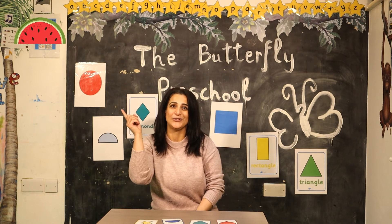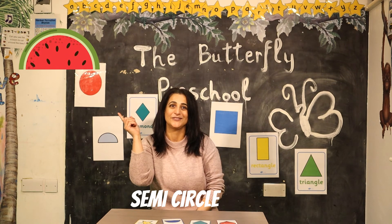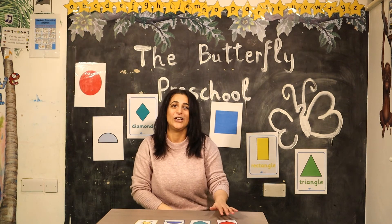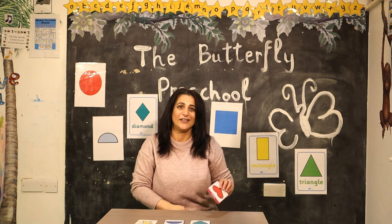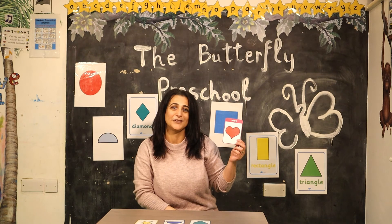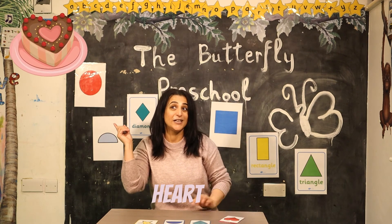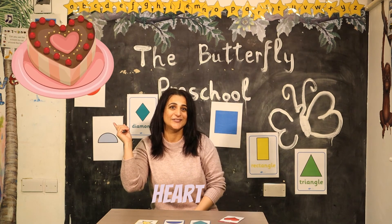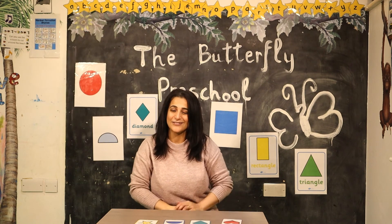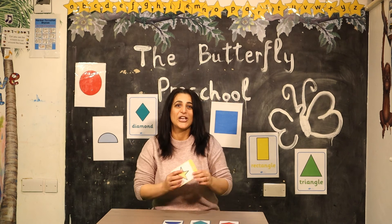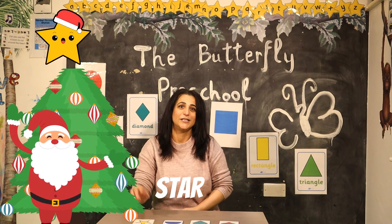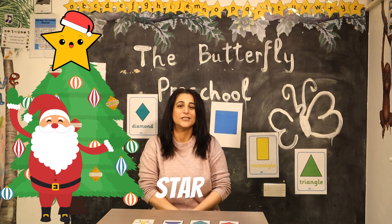Look — what's that? A watermelon! Good, well done. Can you think about something like a heart shape? It could be a birthday cake. Well done! The last shape is star — it could be the shape on top of the Christmas tree, like a star.